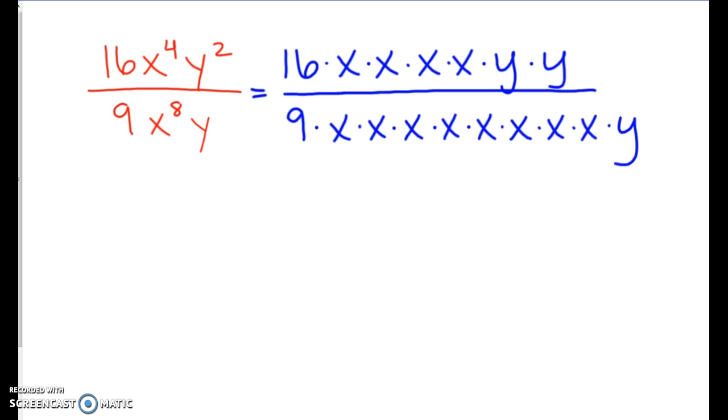So exactly the same like we did the last one. We can cancel out some x's here. We can cancel 4 of them out. And we can cancel out one of the y's on the top and the bottom. So we still have 16 up top. We have 1 y left over, no x's up at the top. And we have 9 on our denominator and 4 x's left over. So x to the fourth.